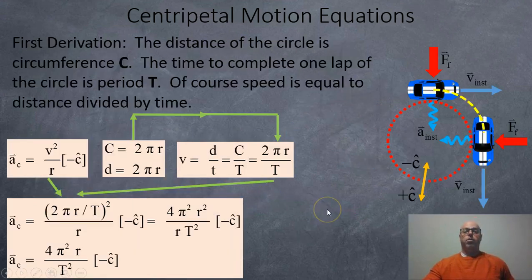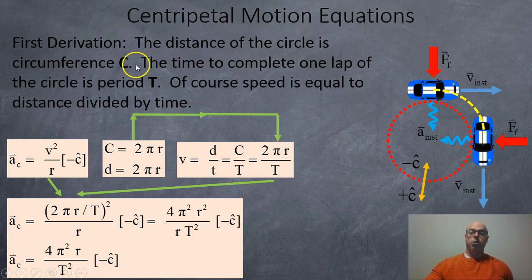Okay, so first let's derive the one with the period in it. So the distance around a circle, or its perimeter, is known as circumference, uppercase C. And the time it takes to complete one lap of the circle is known as period, uppercase T. And of course we know that speed is equal to distance over time. So we're going to take the distance, the circumference 2πr, and replace the distance with that. We're going to take the time and replace it with period T.